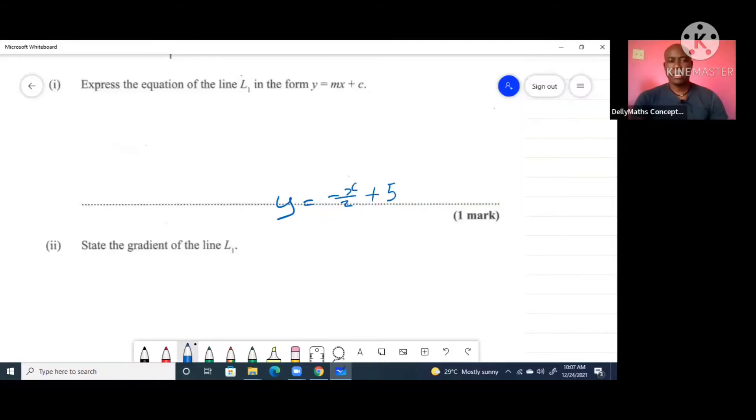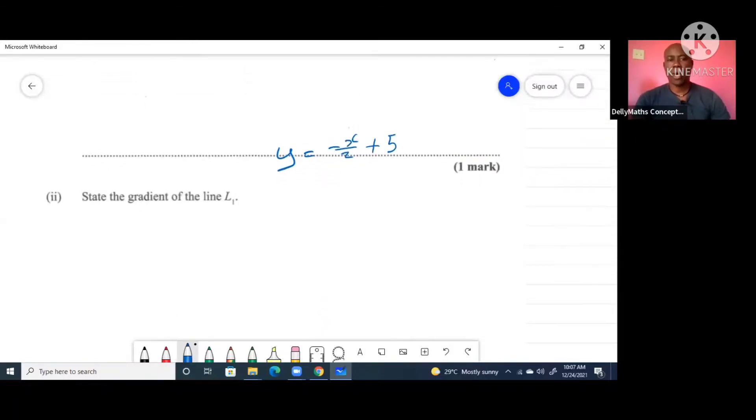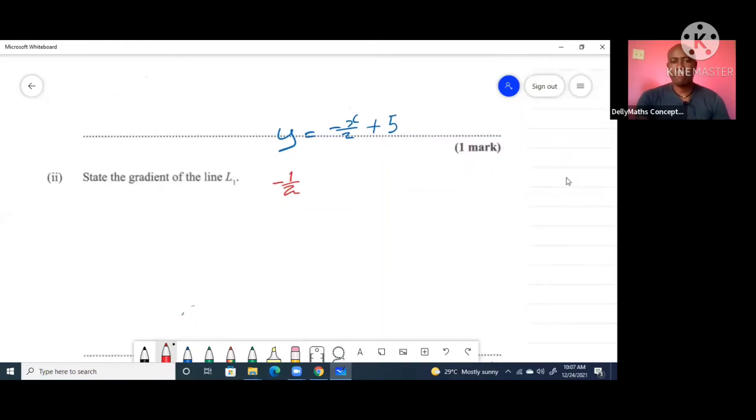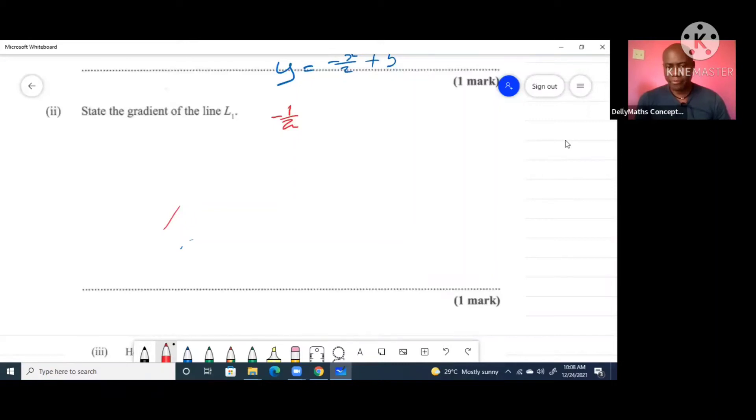Part two to this question says state the gradient of L1. Having had it written in this form, you can definitely state the gradient. The gradient is the coefficient of the x here, so technically this is negative half x or negative x over 2. So the gradient for this is going to be negative a half. Remember when you're writing the gradient, make sure that you're actually representing y alone - transpose making y the subject first, then you can pick the gradient after that.